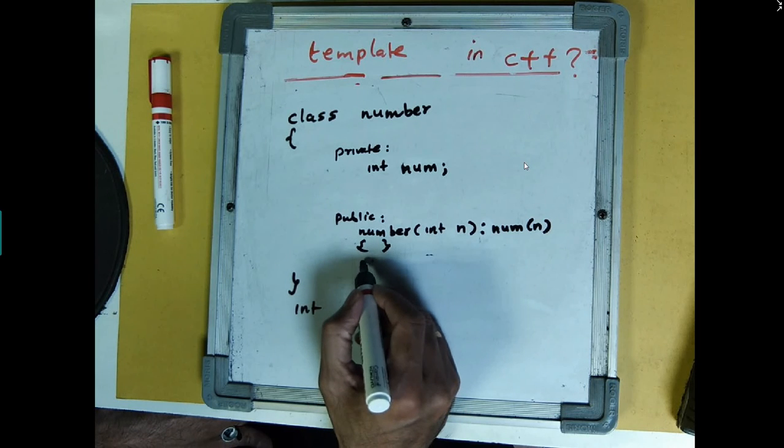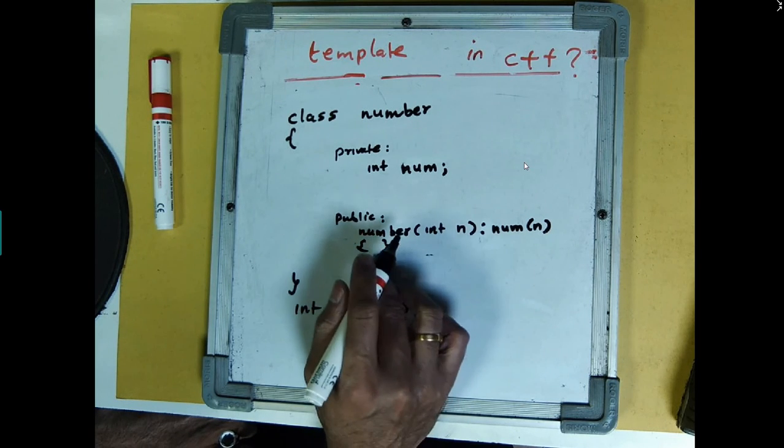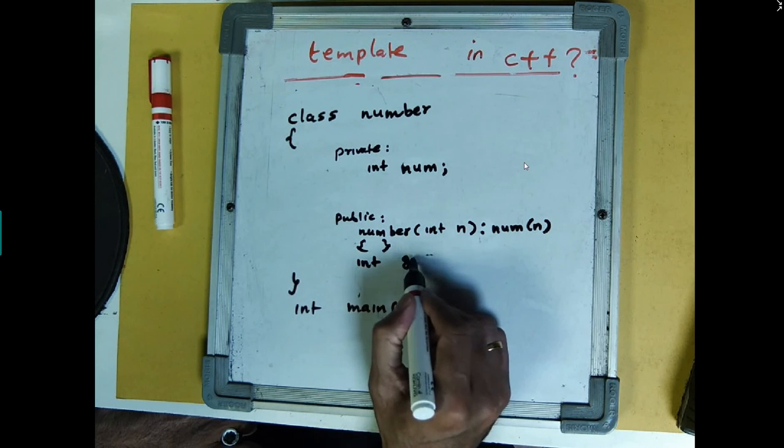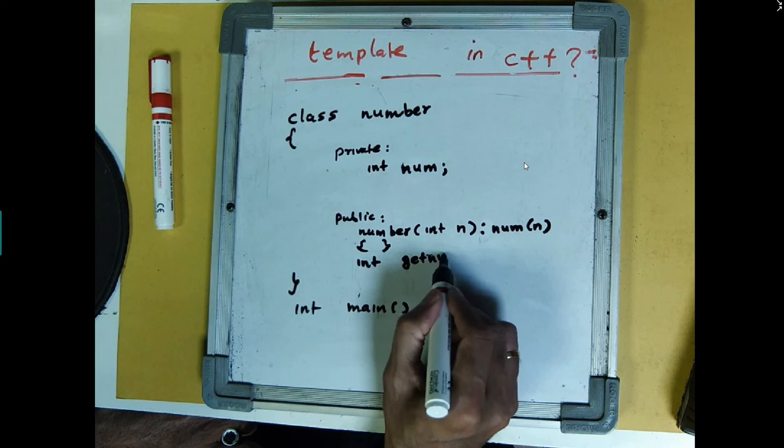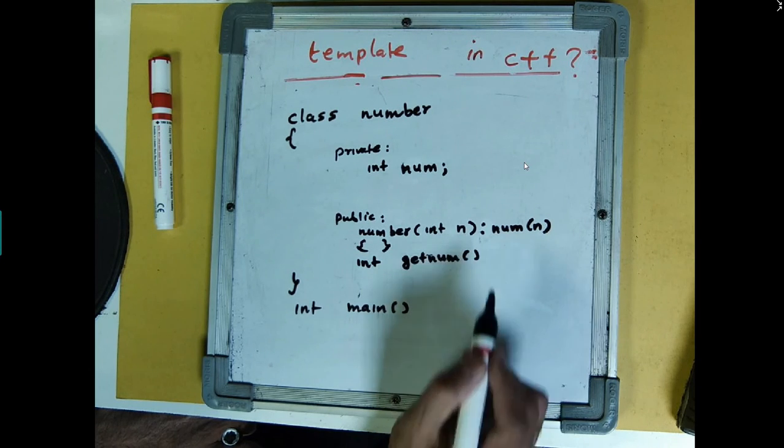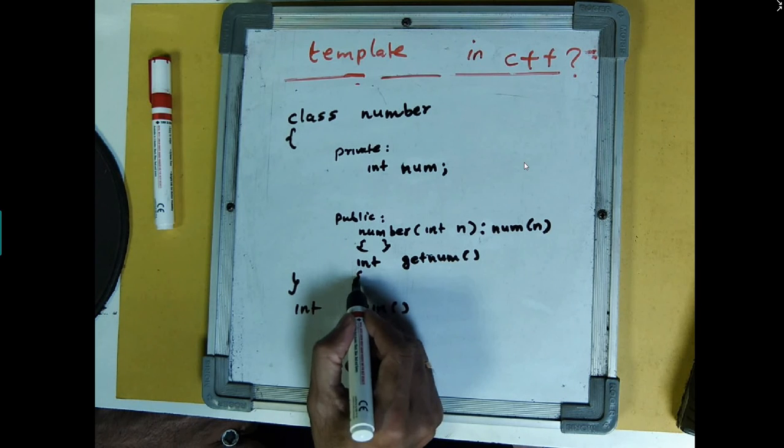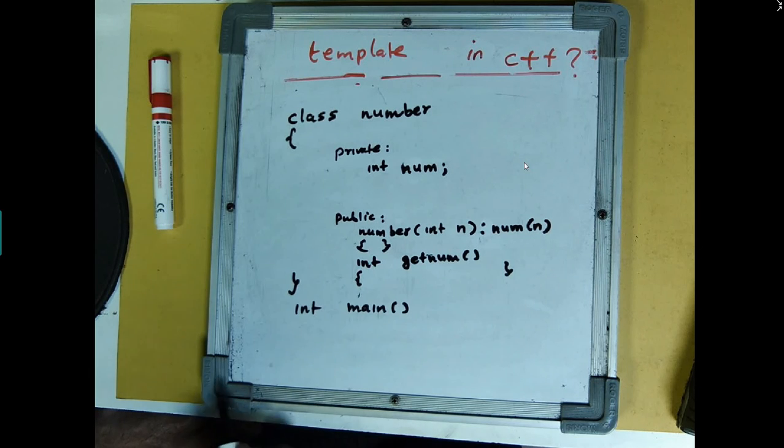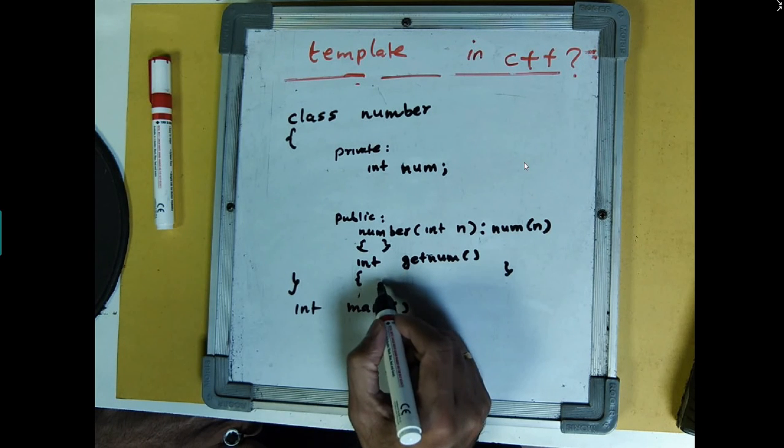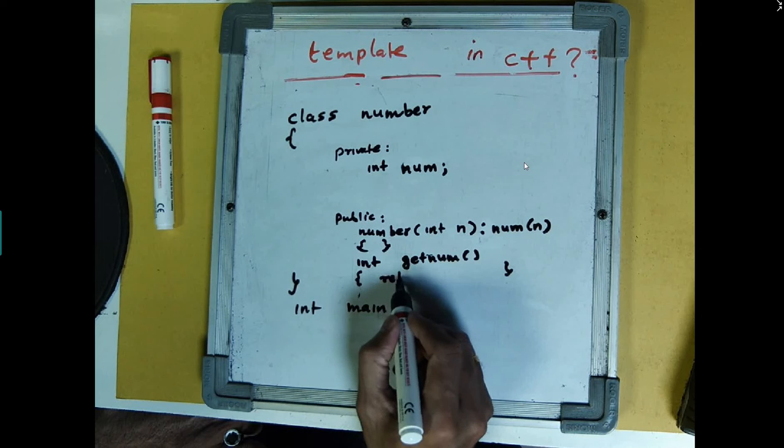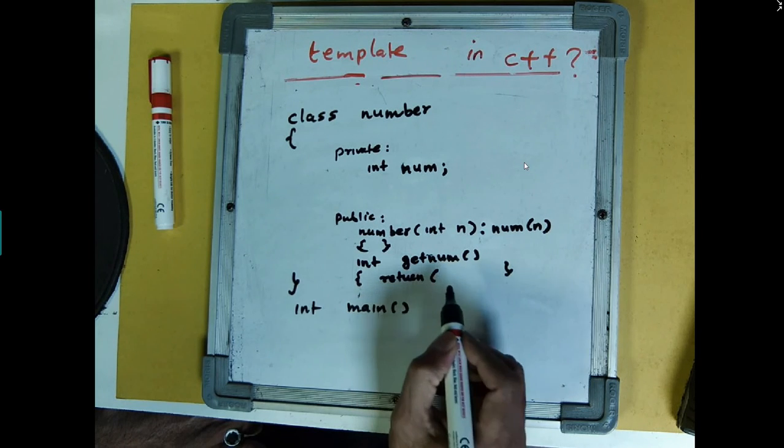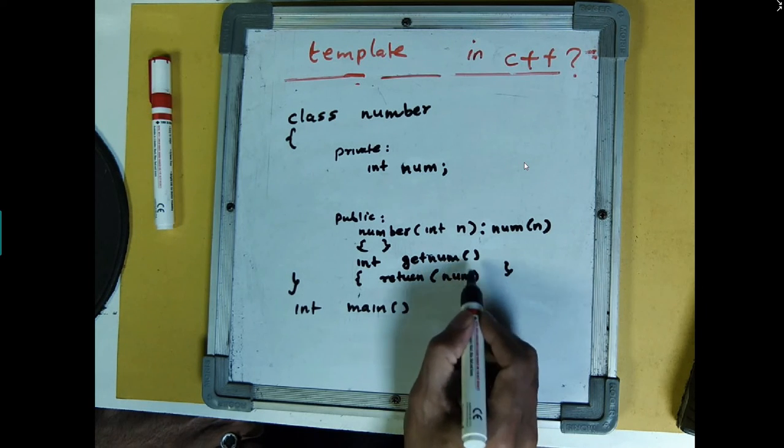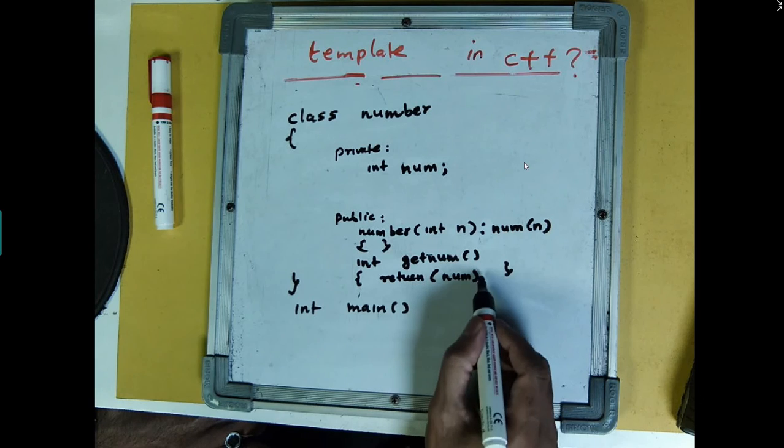Now I am defining another function called, let's say, integer getNum function. So what it will do is it will simply return the number, num, this private variable, it will return.